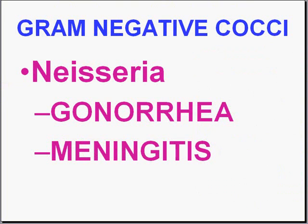Now let's talk about gram-negative cocci. There is really only one genus: Neisseria. Neisseria gonorrhoeae is the cause of gonorrhea. Neisseria meningitidis is one of the leading causes of epidemic meningitis — a feared type — and is not the usual childhood type, which is Haemophilus. This form affects older children, young adults, and older adults. I really can't think of any clinically important gram-negative coccus except for Neisseria.